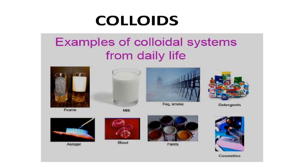In coarse dispersion, particles are visible under an ordinary microscope. They do not pass through filter paper and semipermeable membrane. They will settle down under gravity and don't diffuse. Examples are emulsions, suspensions, and red blood cells. So classification based on size: molecular dispersion is less than 1 nanometer (examples: glass, oxygen gas, glucose); colloidal dispersion is 1 nanometer to 0.5 micrometer (natural and synthetic polymers, lattices); coarse dispersion is above 0.5 micrometer (emulsions, suspensions, red blood cells).